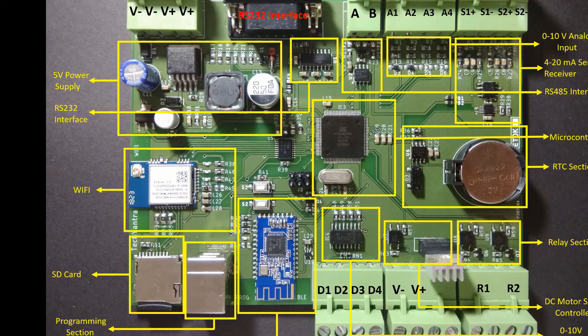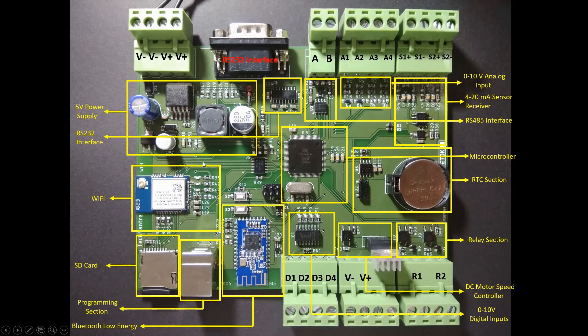The next block is the Wi-Fi block, and in this section we are going to send the parameters of the data logger to a web-based data visualization application, where we will plot the parameters in the form of graphics. That's all about the introductory part of this data logger. I will see you in the next section.